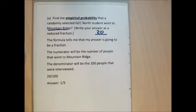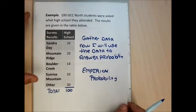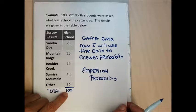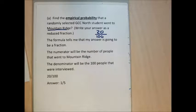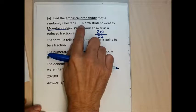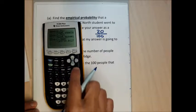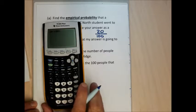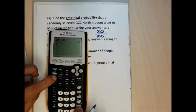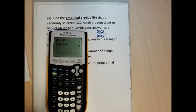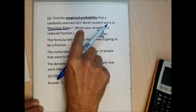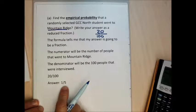So 20 of the 100 students surveyed went to Mountain Ridge. I'll use that to make a probability estimation. If we randomly pick a GCC North student — not necessarily one of these 100 — what's the probability they went to Mountain Ridge? It's 20 over 100, which reduces to one-fifth. Usually when we answer a probability question, we give the answer as a percent or a reduced fraction. So the answer is one in five.